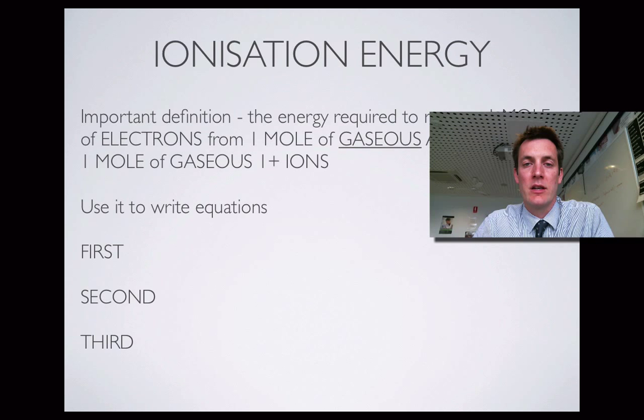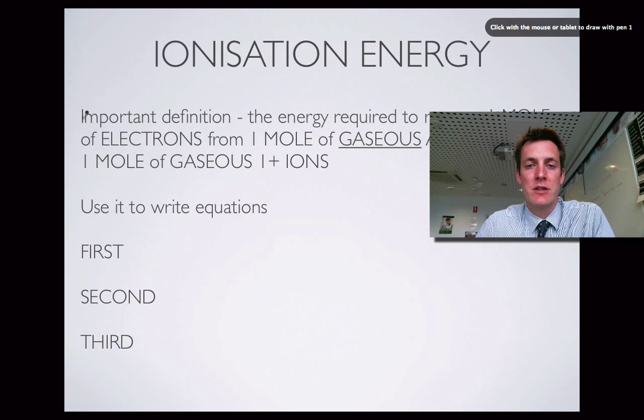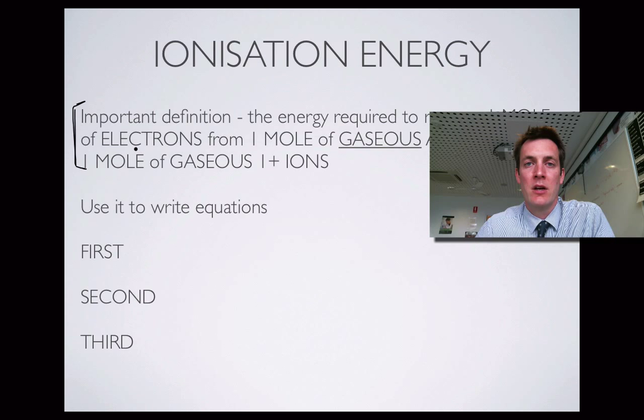Finally, looking at ionization energy, which may be a first ionization energy or successive ionization energies - second, third, fourth, and so on. However many electrons you've got in an atom, you can remove them all if you've got enough energy to supply. First of all, here's the definition of what an ionization energy is. That's an important definition to learn because if you can't define it, you won't be able to write equations later.